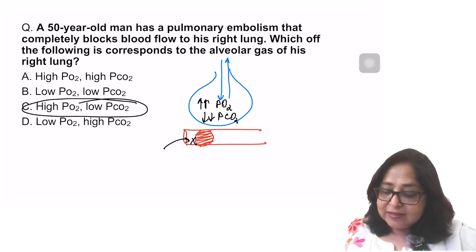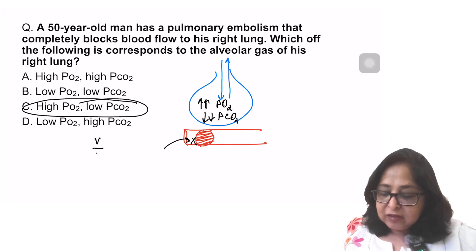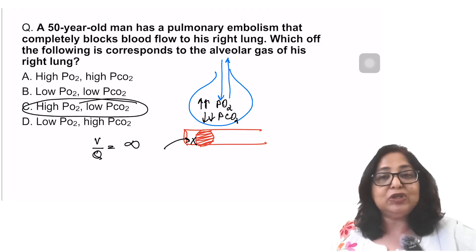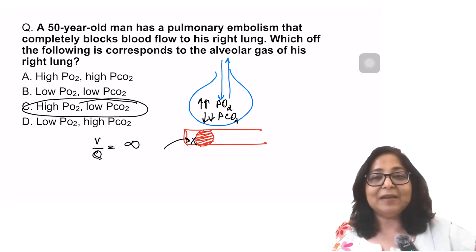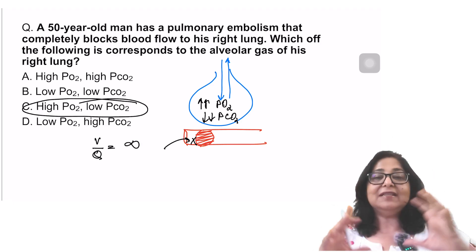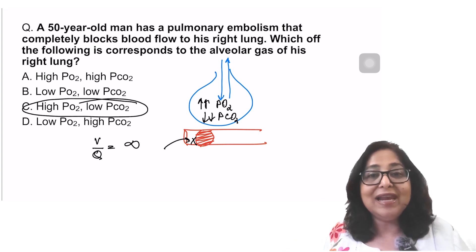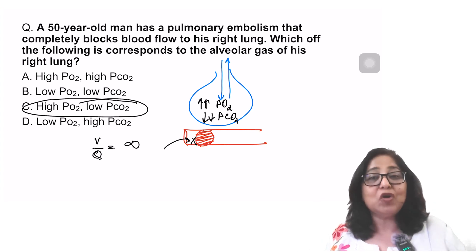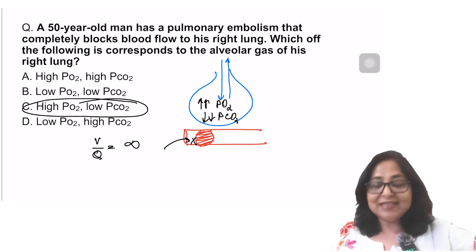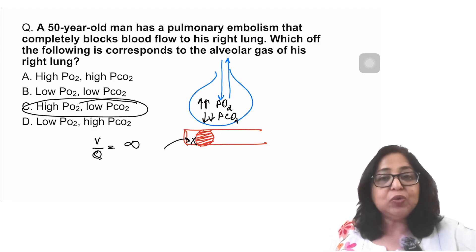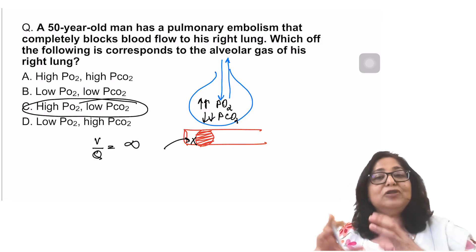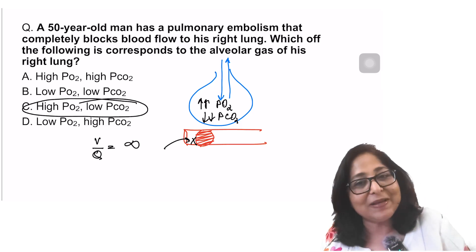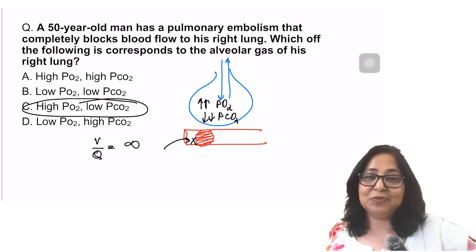Pulmonary embolism means perfusion is 0. The VQ ratio is equal to infinity. That means there is no exchange. The lung is now like dead space, called alveolar dead space. So this is the VQ ratio equal to infinity, and the composition of the alveolar air will be like dead space air: high PO2, very low PCO2.